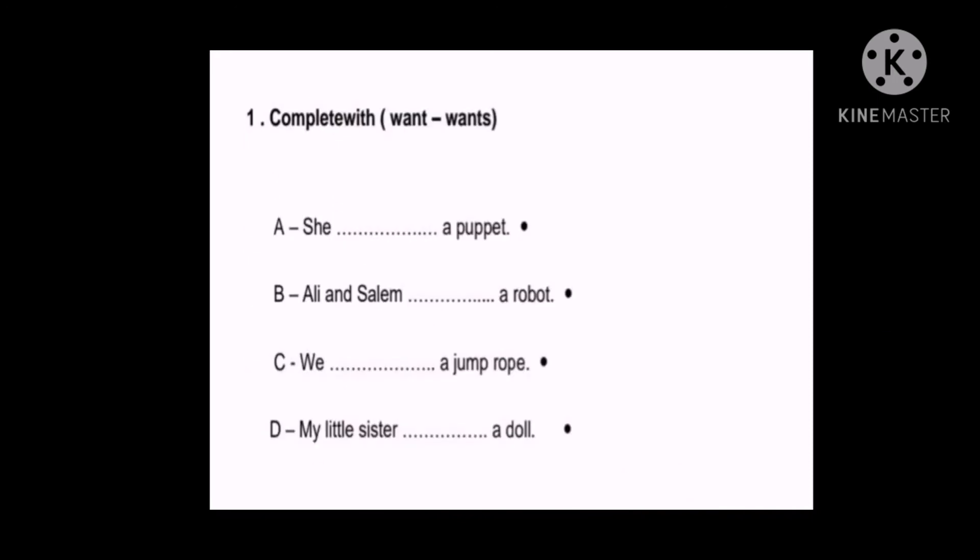Now let's see these exercises. We have three exercises on this grammar. Let's see exercise number one. Complete with want or wants. So we should complete here in the spaces. I have blanks. I need to complete them with want or wants. So how can I tell? How can I know if it's want or wants? Who can tell me? I said it in the previous video when we had the previous grammar. You should look at which element of the sentence. It depends on the subject.